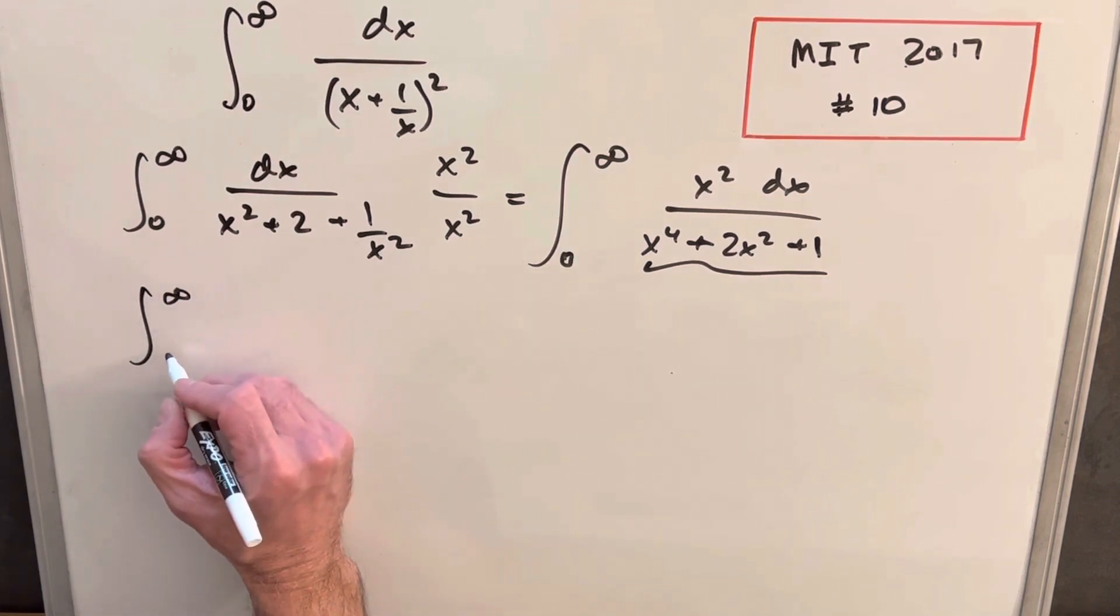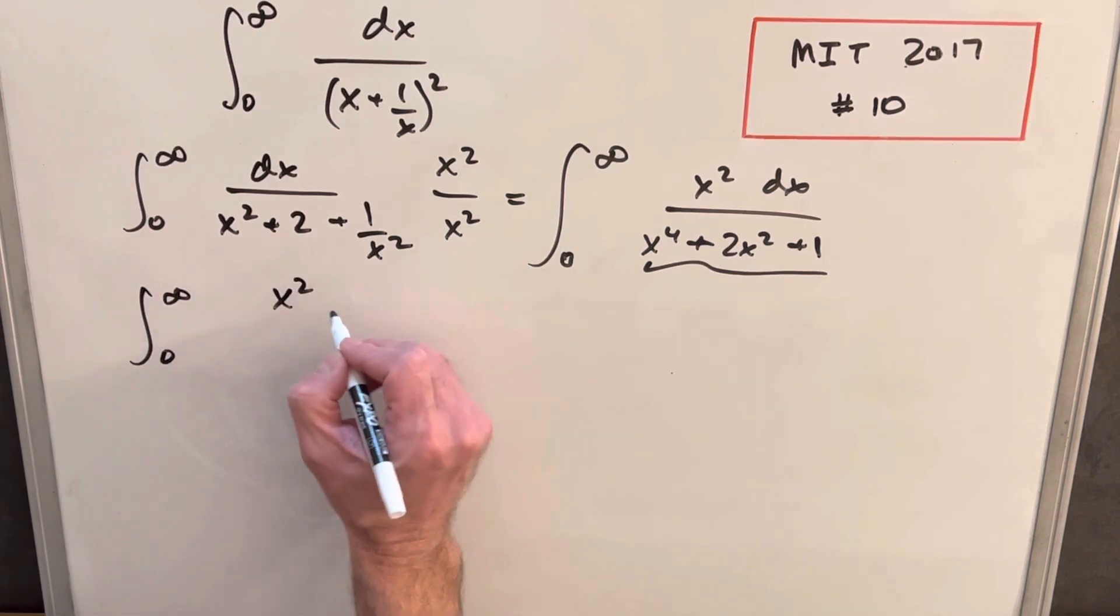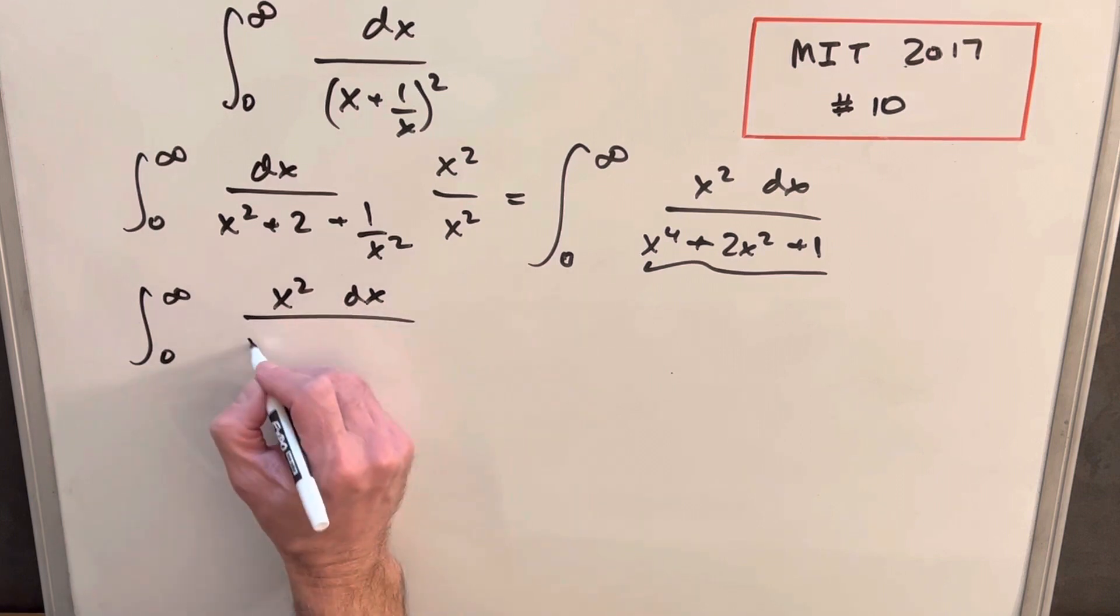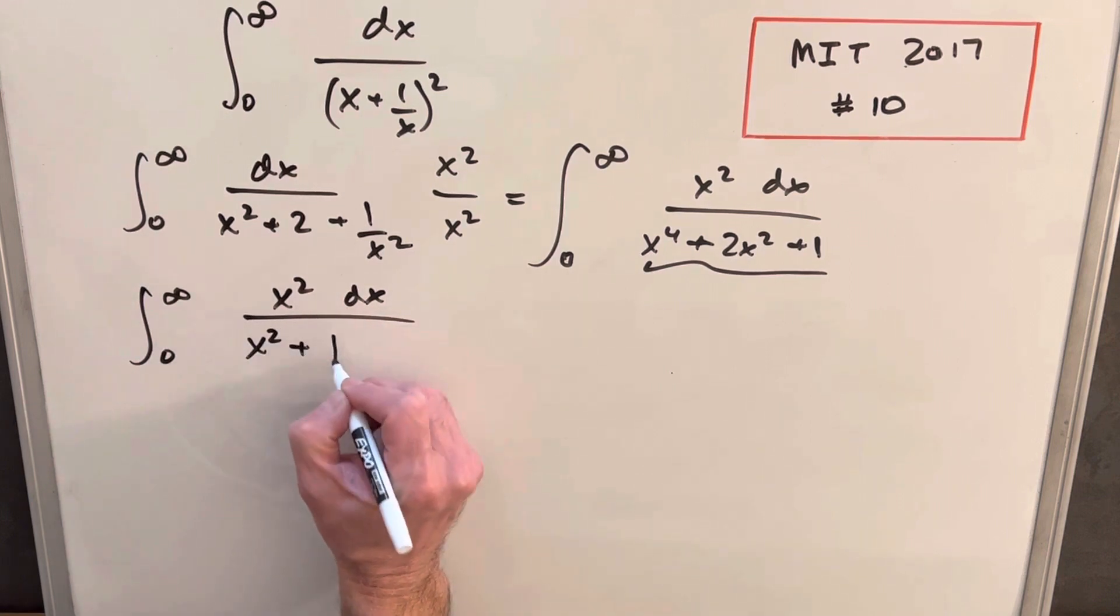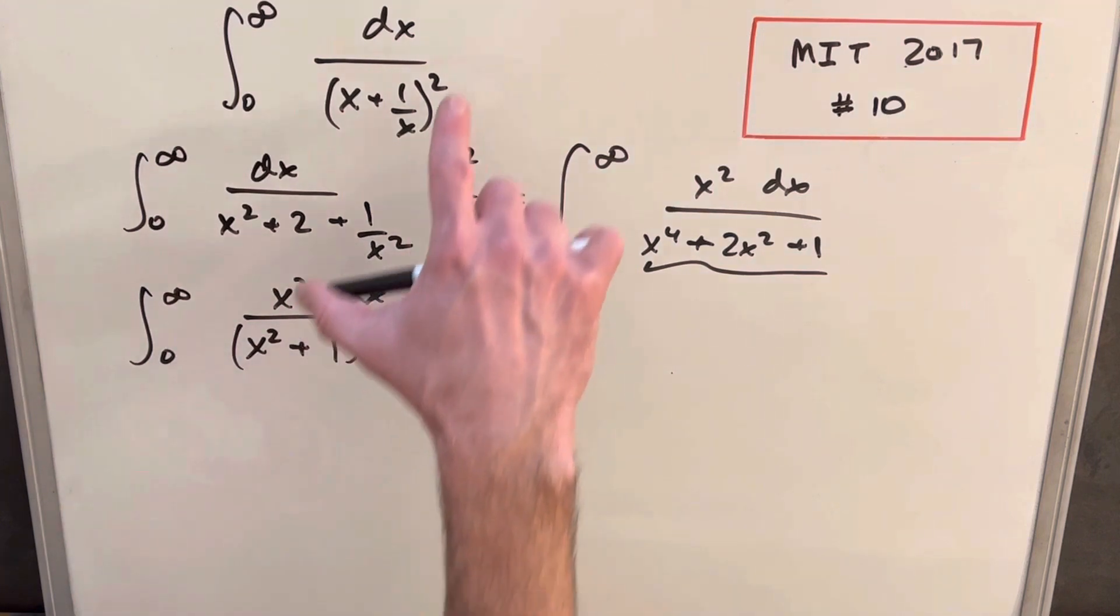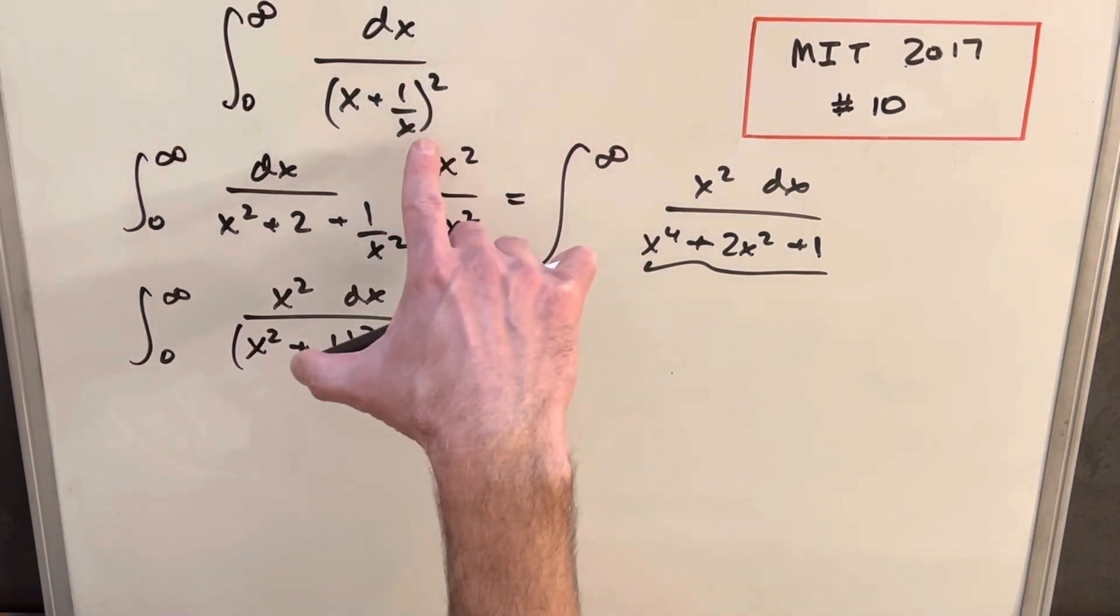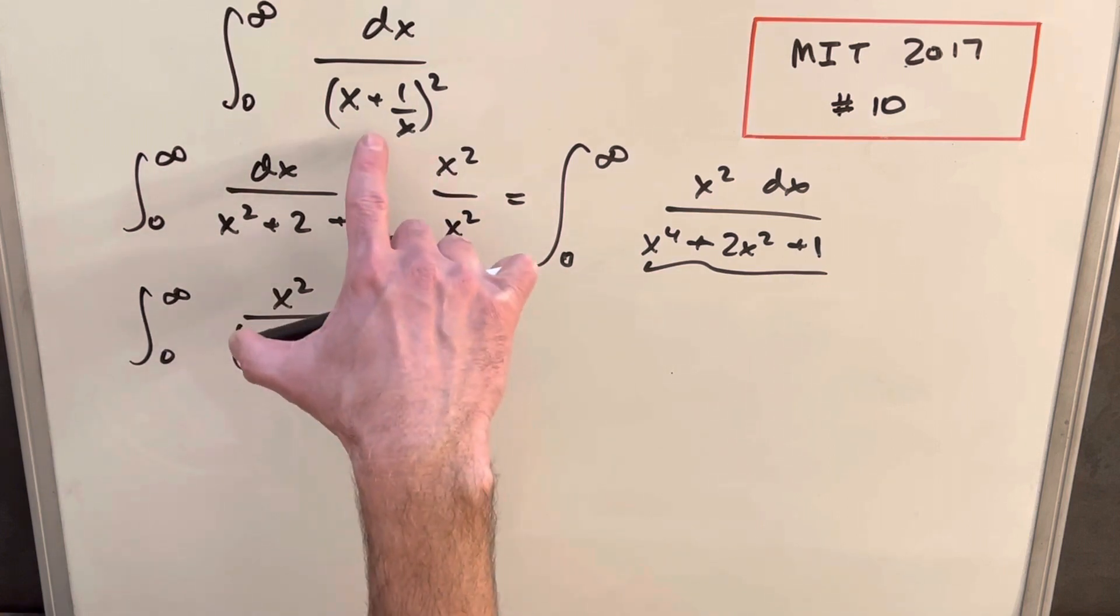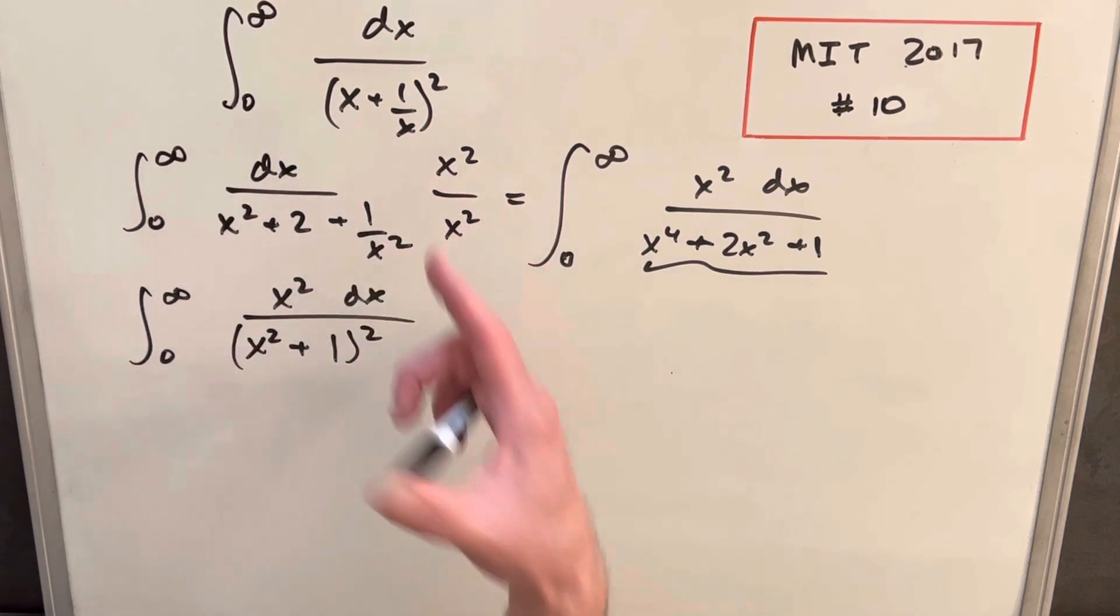So rewriting it, infinity to zero x squared dx over x squared plus 1 all squared. And that's why I'm saying there's slightly a different way because we actually could just start it here and multiply x squared. If we did that, we just have to bring the x squared in here as an x. I just wanted to show the factoring this way.